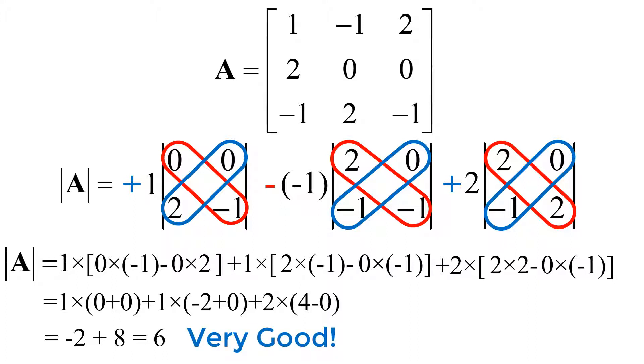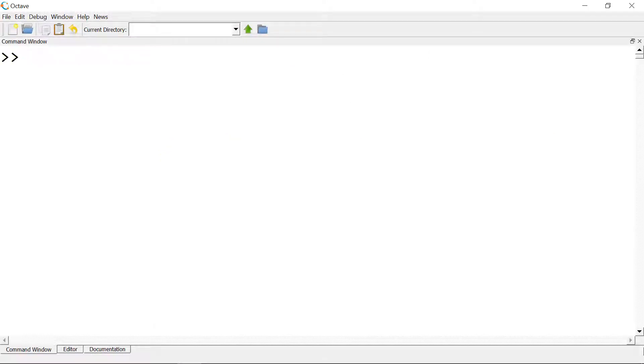Congratulations! You successfully calculated the determinant of matrix A. In order to check your calculation of the determinant, you can use the built-in function DET in Octave or MATLAB. The DET function returns the determinant of a matrix. First, you need to create the matrix A and then use it as an input for the DET function. The result is the same as what you got from the previous slide, so you are good.